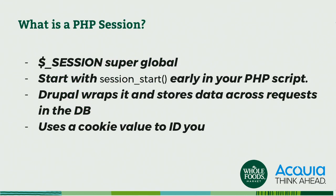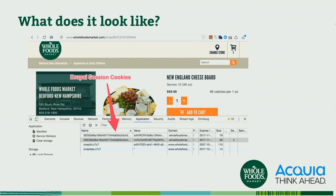What does a PHP session look like? We have this session super global. Often it starts with a session_start early in your PHP script. Drupal wraps this up and stores all that data across those requests in the DB. So a lot of that is handled at a pretty low level of the bootstrap. It then uses a cookie value to ID you — there's some sort of a GUID stored in a random cookie. Typically what you'll see with Drupal is cookies that start with SESS and then they have a value. It's just a random identifier for you — and you can see these very easily in your browser, which can be useful to poke at.